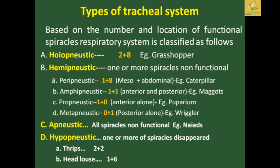The metapneustic type has a posterior spiracle — example: wrigglers. The apneustic type has all spiracles non-functional — example: naiads. The hypopneustic type has one or more spiracles disappeared — example: thrips, which have two spiracles present and two disappeared, and mayflies where one spiracle is disappeared and six pairs of spiracles are present.